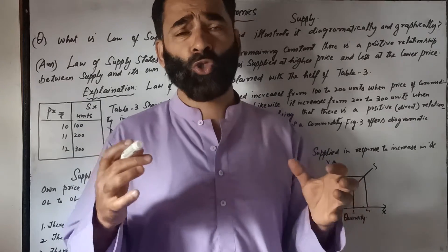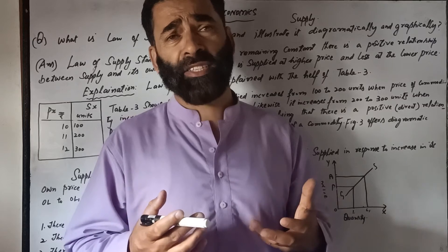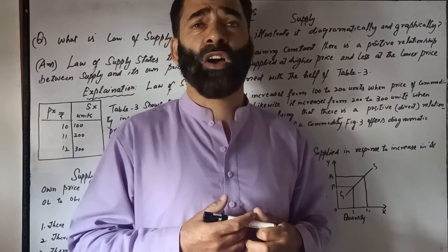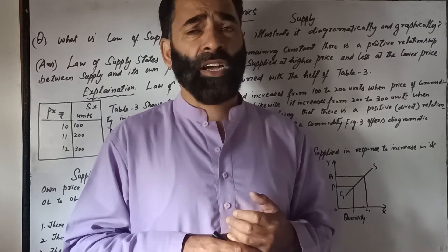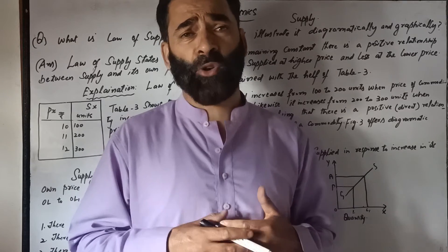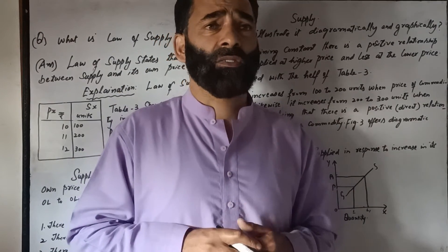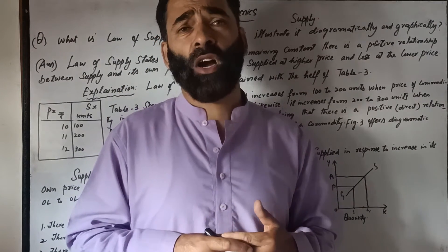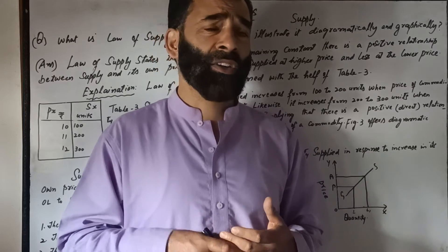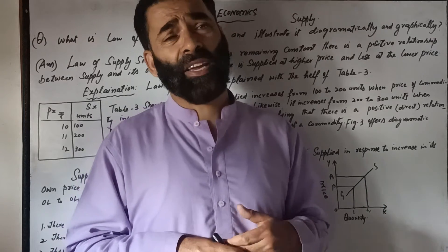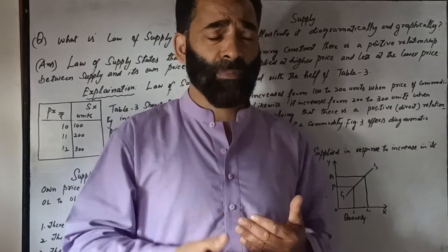There are two things in the law of supply: one is price and one is the supply of a commodity. For example, a supplier will supply more at a higher price, and if the price is lesser, then the quantity supplied will also be less.